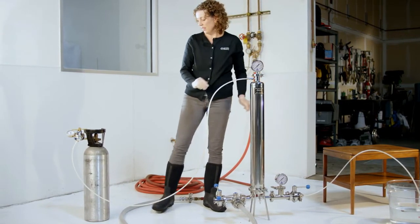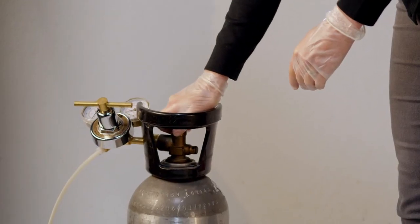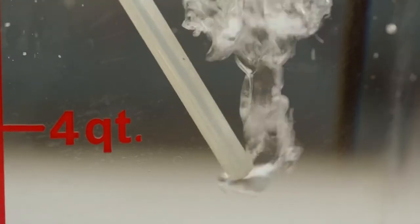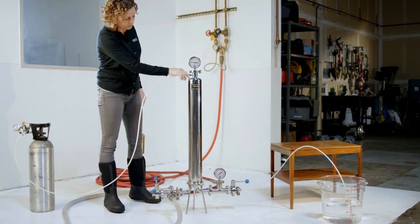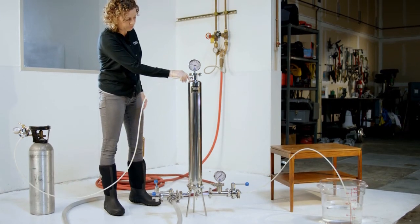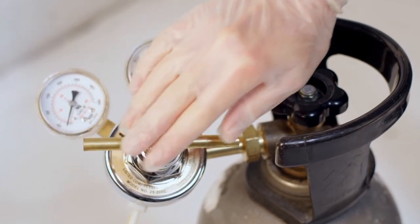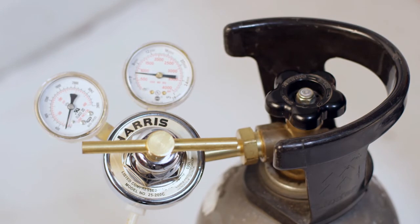Gradually increase pressure on the compressed gas regulator from 0 to around 5 psi or 0.3 bar. You will immediately notice a rush of water through the discharge hose into your bucket. This is the residual rinse water in the housing that may not have drained.